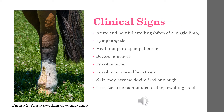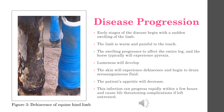Clinical signs can vary due to the severity of cellulitis in each individual horse, but in general they include acute and painful swelling, typically of one single hind limb, lymphangitis, heat and pain upon palpation of the limb, severe lameness, fever, and increased heart rate. The skin may also become devitalized or slough off, and there may be localized edema and ulcers along the swelling track.